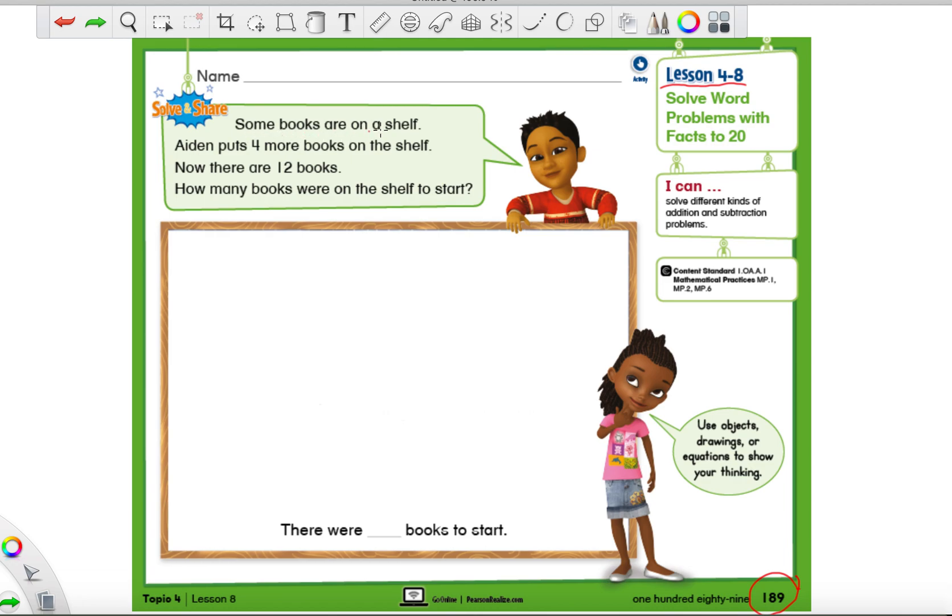Let's go ahead and start reading this first one. Some books are on a shelf. Do we know how many books are on the shelf? We don't. That's a little bit of a question mark. Aiden puts four more books on the shelf. So we have the number four. Is there anything else special that you heard in that sentence? This word more is usually pretty special.